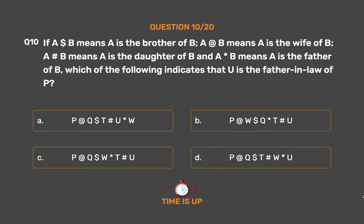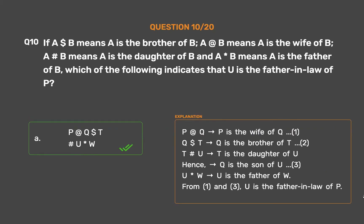The correct answer is Option A: P @ Q $ T # U * W. P @ Q means P is the wife of Q. Q $ T means Q is the brother of T, hence Q is the son of U. T # U means T is the daughter of U, hence Q is the son of U. U * W means U is the father of W. From steps 1 and 3, U is the father-in-law of P.